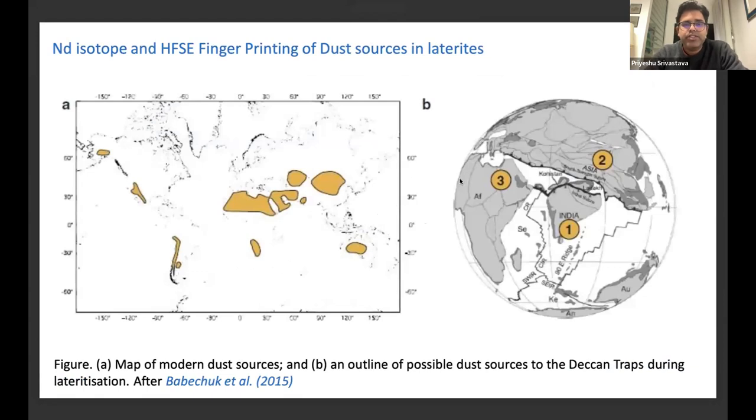Then there are other sources for different elements in the laterites, which has been suggested using the neodymium isotopes as well as high-field strength elements. These three are the prominent sources which can induce more dust into the laterite during its alteration and contributing to the laterite formations.